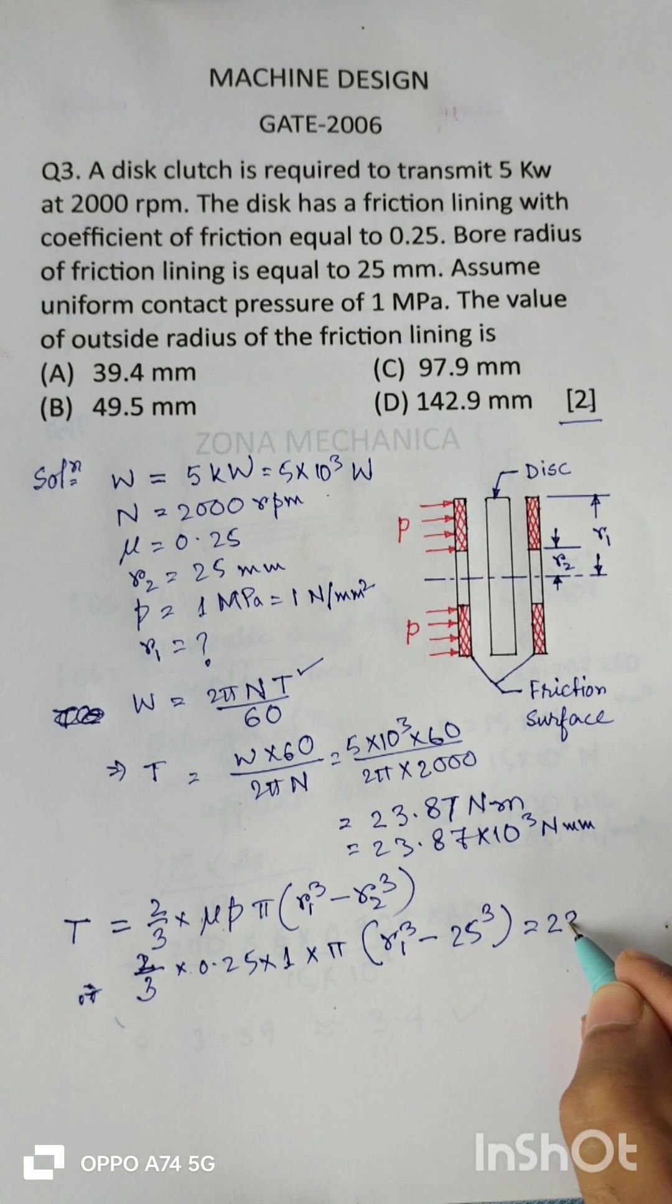This is equal to 23.87 into 10 to the power 3, which equals 61213.34.